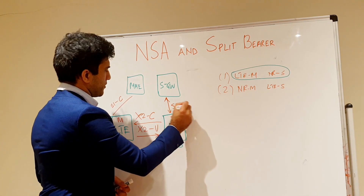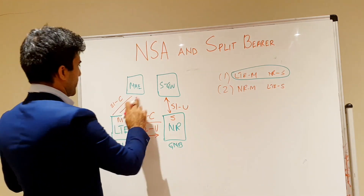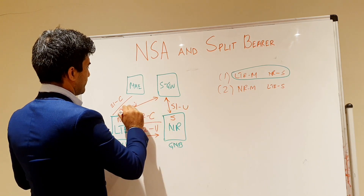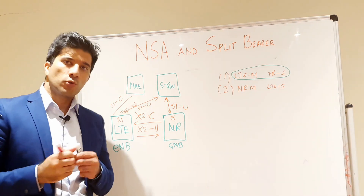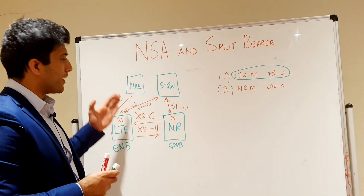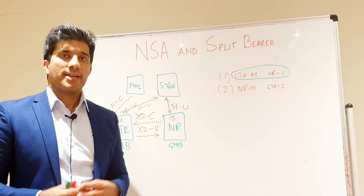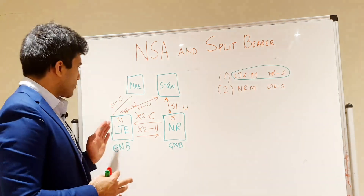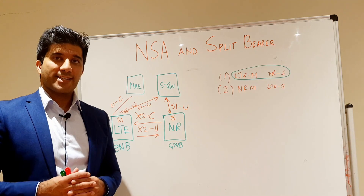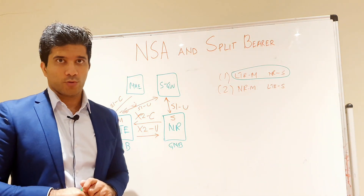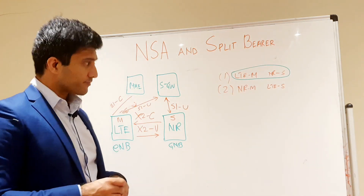There is also an S1-U connection from the NR node to the SGW. What you can see here is that the NR node has no control plane connection with the MME, and that is why it is called the secondary node. The LTE master node must first set up the connection with the MME, and then the MME will serve the secondary NR node.